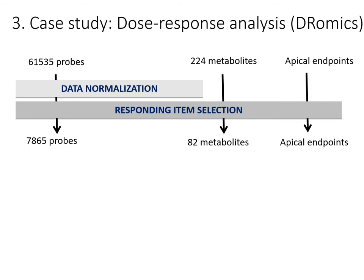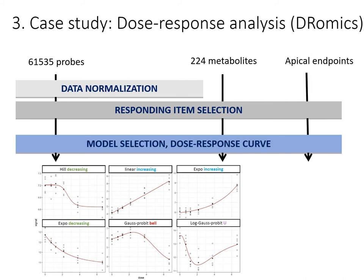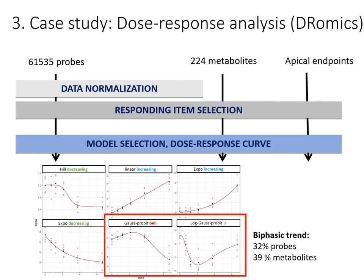Then it selected the best model for each probe, metabolite, and endpoint when possible. It is worth noting that 39% of the metabolites and 32% of the probes exhibited a biphasic response trend. So clearly this is not an exception — biphasic trends are really present in molecular responses and we really need dedicated tools that consider such responses.